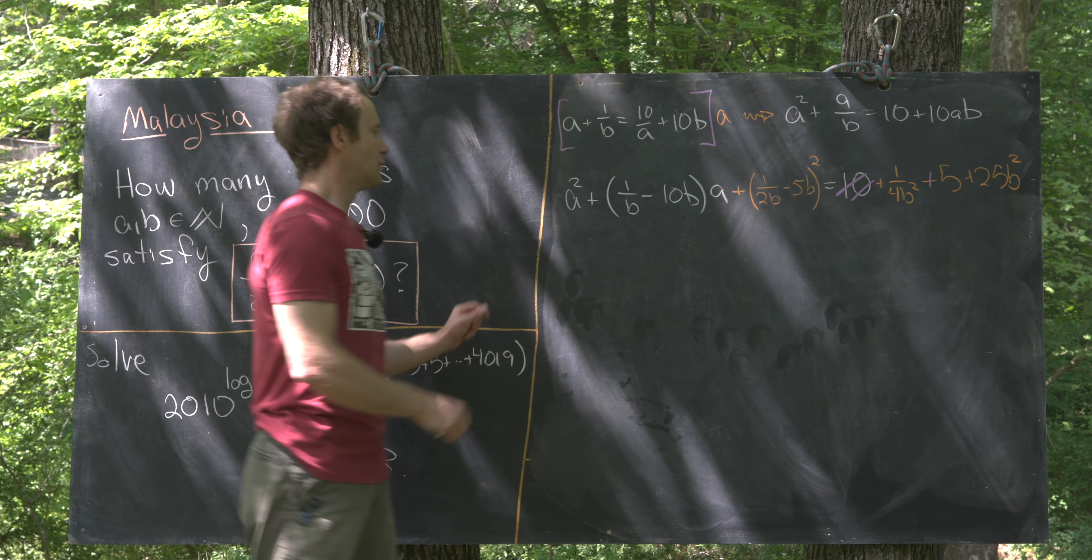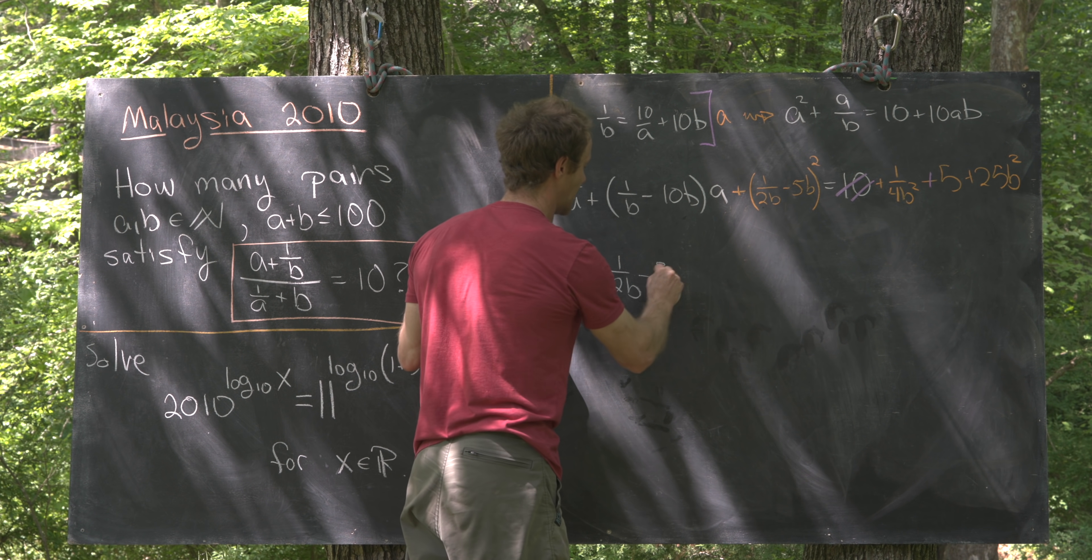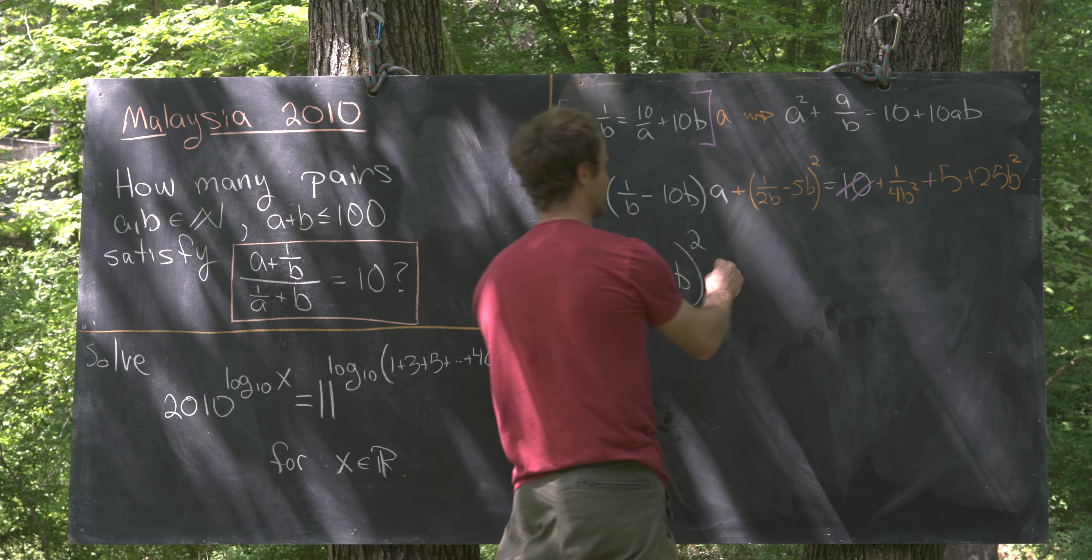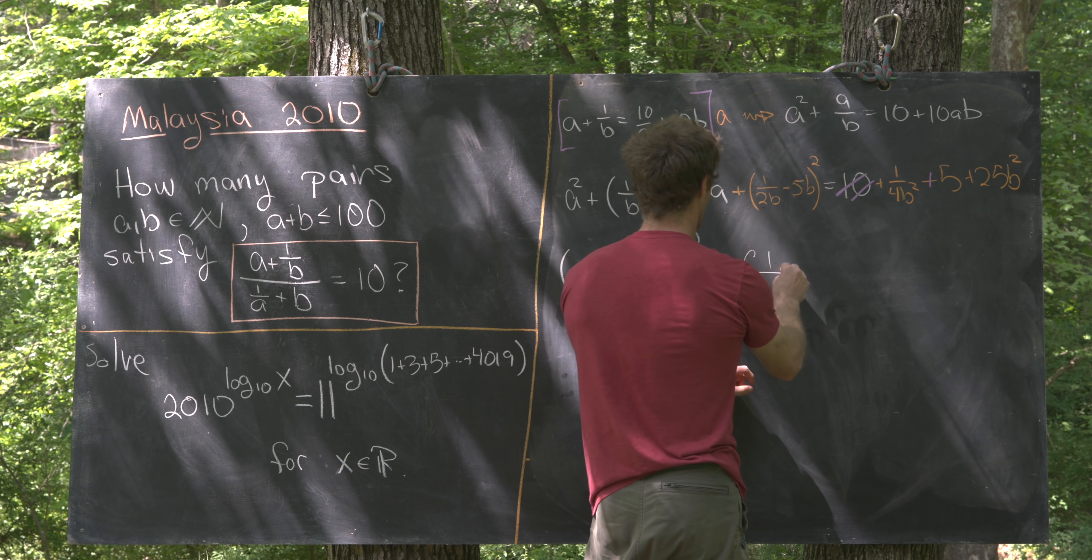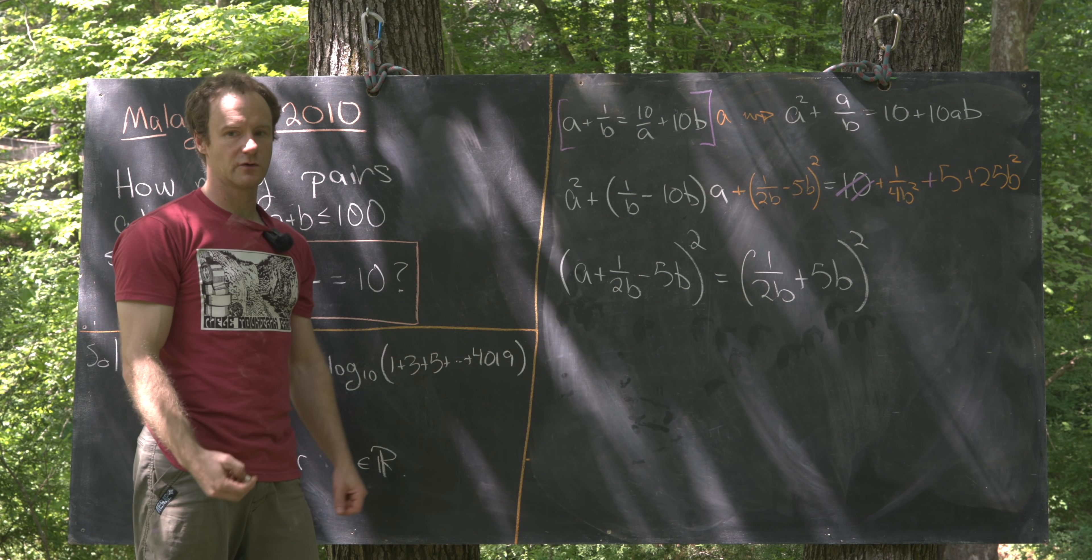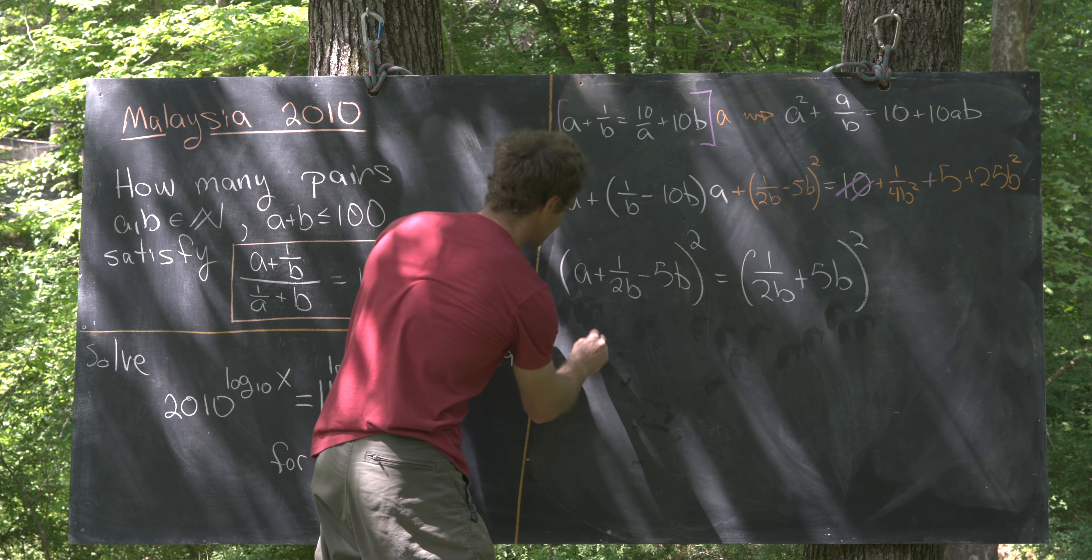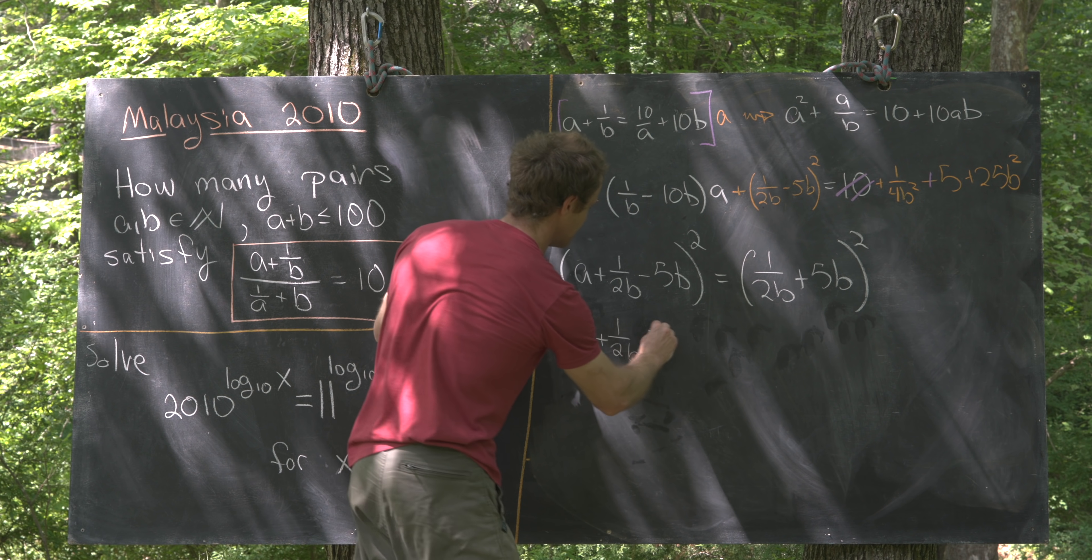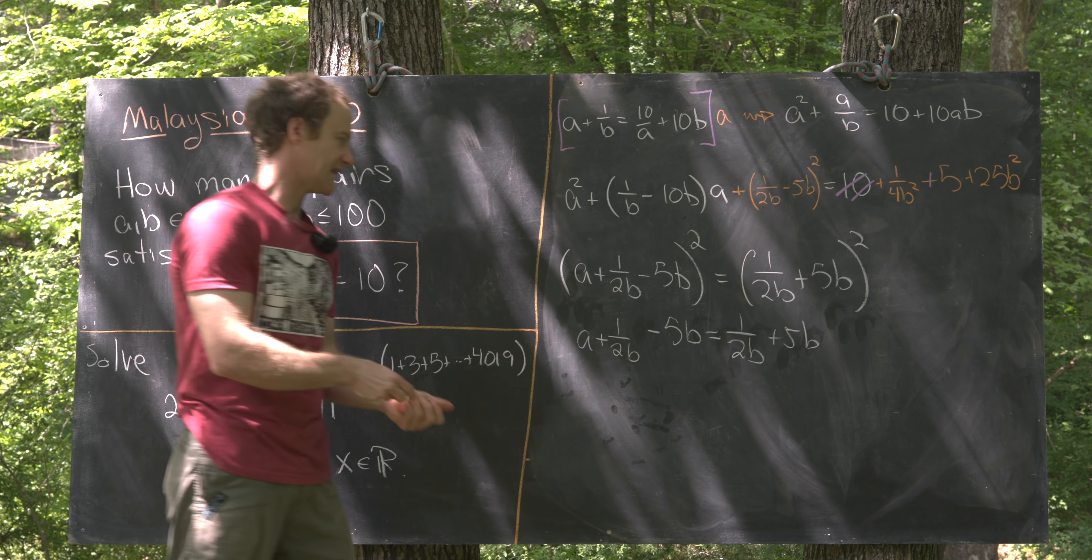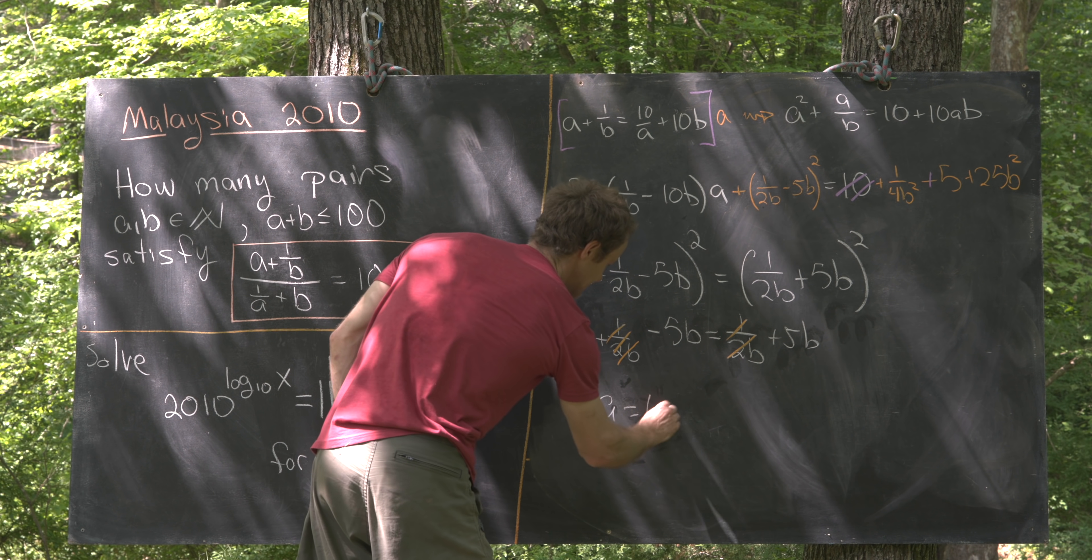So by our construction, we can factor the left hand side of this equation as A plus 1 over 2B minus 5B all squared. And then by the hint that was built into the problem, we can factor the right hand side of this equation as 1 over 2B plus 5B quantity squared. Next, we'll take the square root. We only need to take the positive square root because we're working over natural numbers. That'll leave us with A plus 1 over 2B minus 5B equals 1 over 2B plus 5B. We can cancel the 1 over 2B from both sides of the equation, leaving us with A equals 10B.